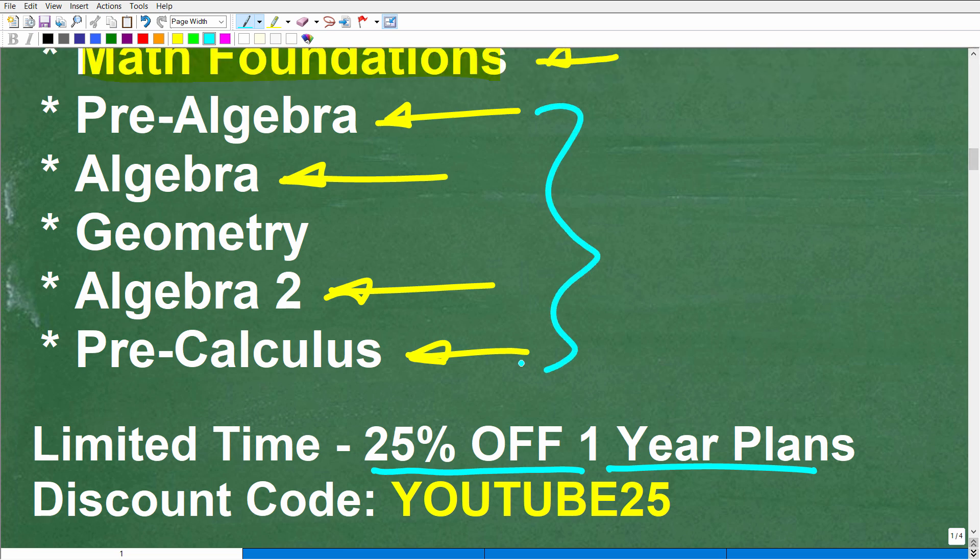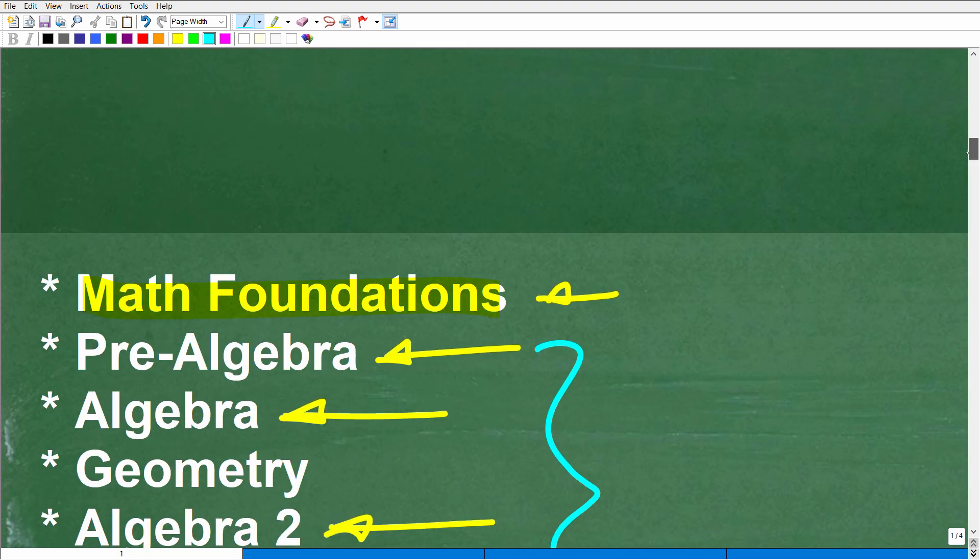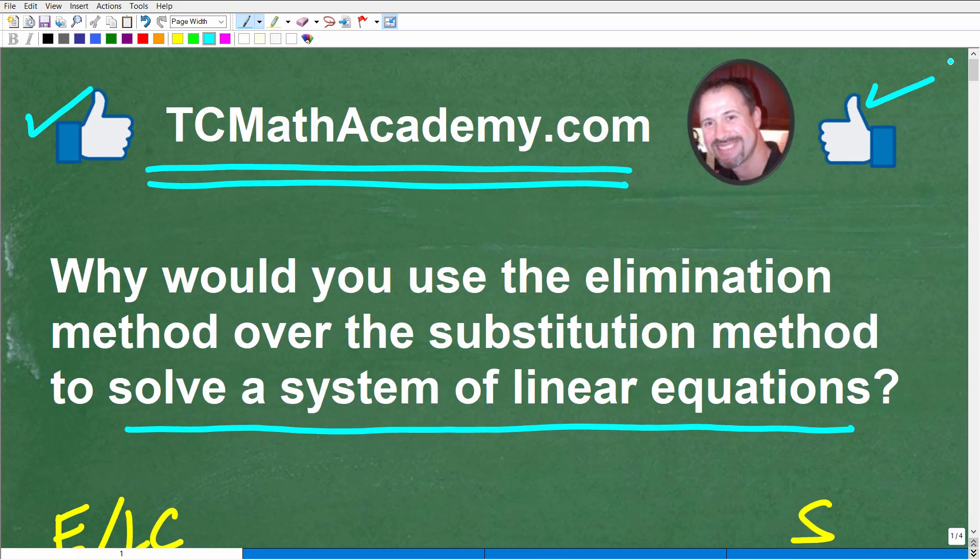So when you enroll in these major courses here, like pre-algebra, pre-calculus, these are full curriculum courses. So I offer one month and one year plans. So right now for a limited time, you can get 25% off the one year plans. Just use this discount code YouTube 25. So at checkout, just type that in and you'll get your 25% off. Matter of fact, I'm going to leave links to all these courses in the description below. Okay. So if you are really serious about improving your algebra skills and learning a lot about systems, then check out my full courses, cause it's really a step up from what I do on YouTube. Okay. So with that being said, I definitely wish you all the best in your mathematics adventures. Thank you for your time and have a great day.